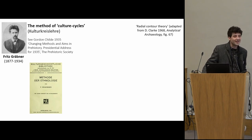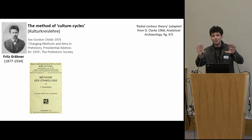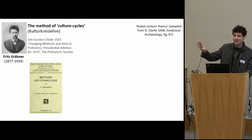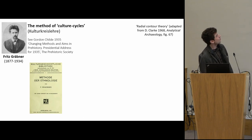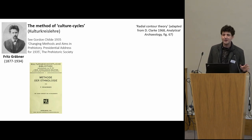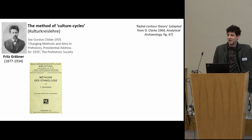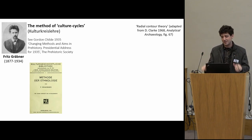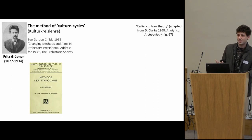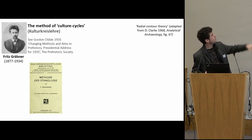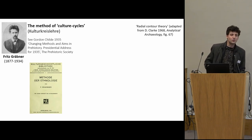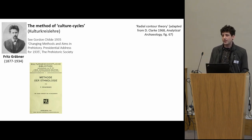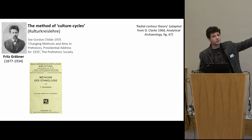We must not confuse the cycles of articulation and the method of culture cycles, which is Childe's translation of the word Kulturkreis — a very interesting translation — the label used in Germany and Austria. This is talking about something that was happening in the 1920s and 1930s, especially in Austria and Germany: a form of diffusionism that was pursued. It came from Fritz Graebner, a German who moved to Austria to conduct fieldwork in places like the Western Pacific, where there was funding for expeditions.